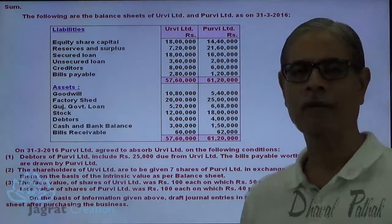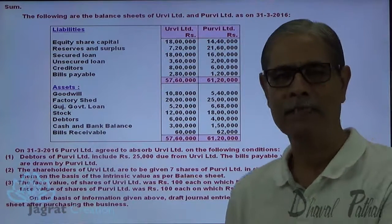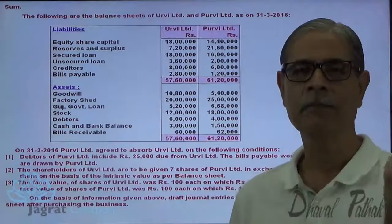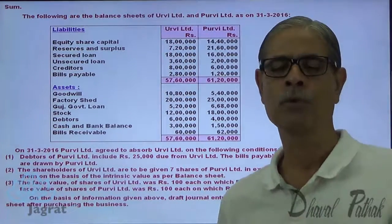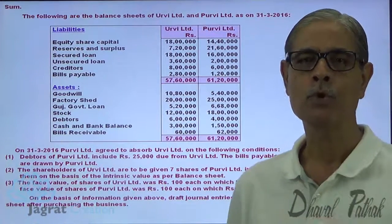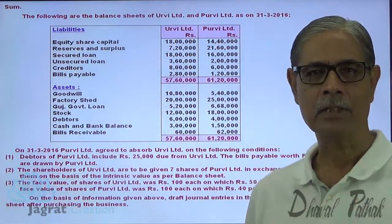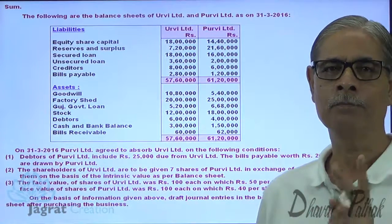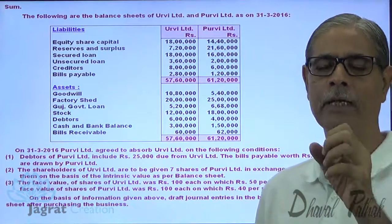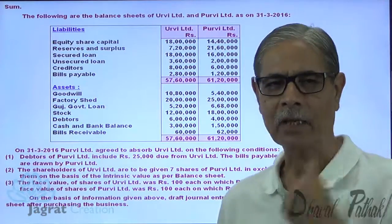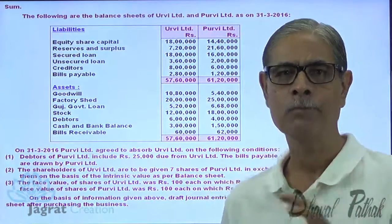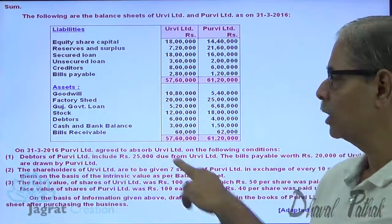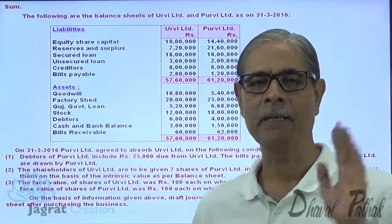Then after absorption, what will happen? I will have a claim of 25,000 from myself and I will have an obligation to pay myself 25,000. That obligation will appear in the balance sheet on both sides — one on the asset side in debtors and second on the liability side in creditors. It is not fair to write a claim against myself and write an obligation from me. So I cannot have both claim and obligation — that is mutual indebtedness, which is to be cancelled.